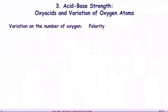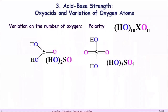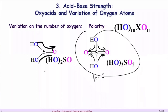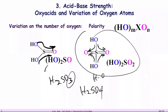Variation in the number of oxygens: H₂SO₃ has three oxygens and H₂SO₄ has four oxygens. More oxygens pull more strongly on the electrons, thereby weakening the hydrogen-oxygen bond. Therefore H₂SO₄ is a stronger acid than H₂SO₃.